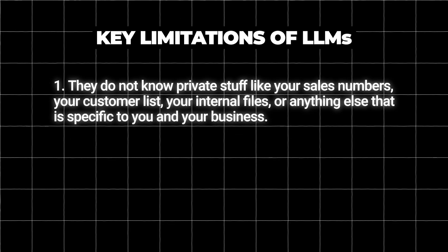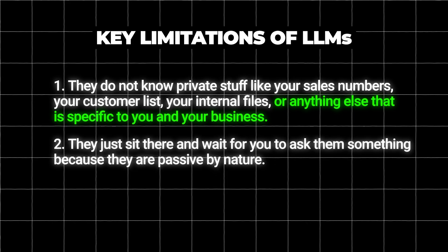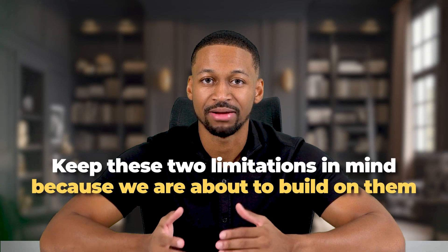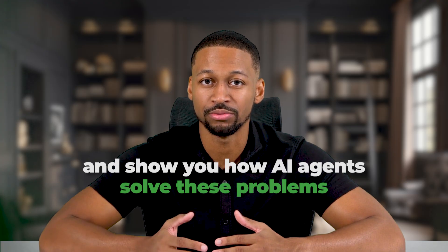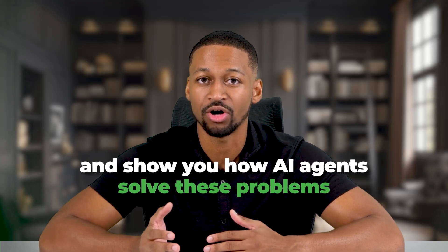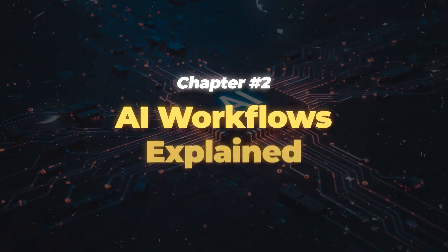This shows us two big limits of basic AI chat modes. First, they do not know private stuff like your sales numbers, your customer list, your internal files, or anything else specific to you and your business. Second, they just sit there and wait for you to ask them something. They react to your prompts but do not act on their own or go out and do things for you. Keep these two limitations in mind because we are about to build on them and show you how AI agents solve these problems as we move into chapter two: AI workflows explained.